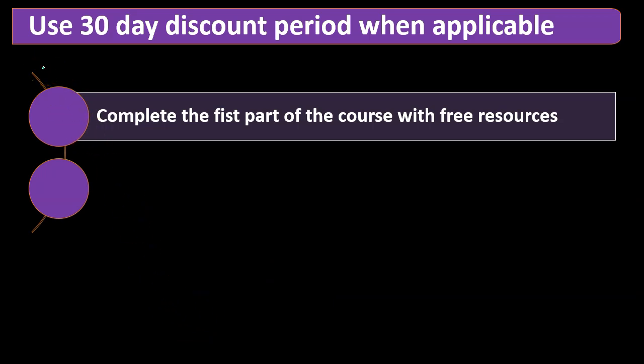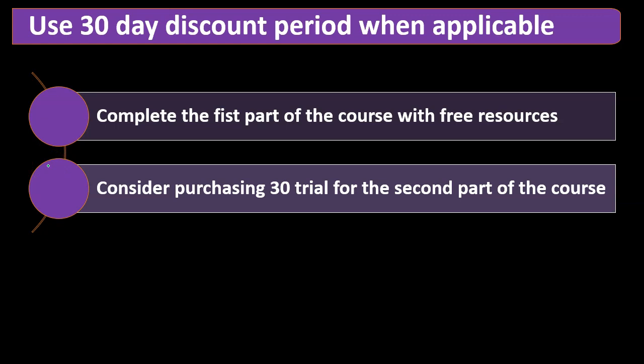Then there's the option to use the 30-day discount period when applicable. Intuit, like other vendors, will often provide some type of discount at the beginning — possibly even a free 30-day trial. To maximize that 30 days, start off with the free test drive version for the navigation portion. When you get to the second half of the course where you actually start a new QuickBooks file and do data input, that's when you'd start the 30-day free trial — set up a new company file, enter the fresh data, and then make sure to cancel it at the end of the 30 days.